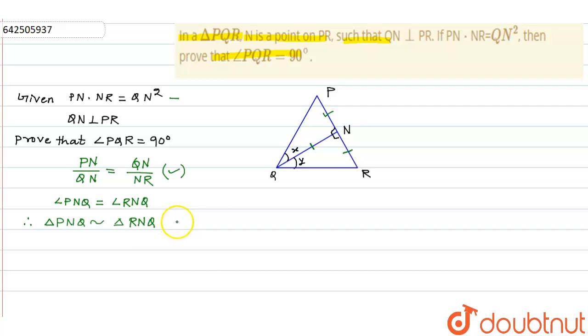Since these are similar, we can say triangle PNQ and triangle RNQ are equiangular, so we can say